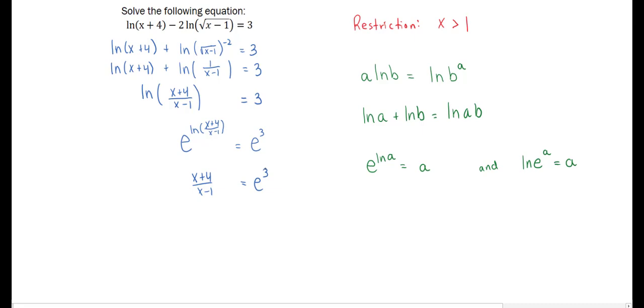So you'll notice that now we have a rational equation to solve. While we've been trying to solve for x, we've actually changed the problem a bit, and this is why it's important for us to think about that restriction we discussed at the beginning to identify any possible extraneous solutions.